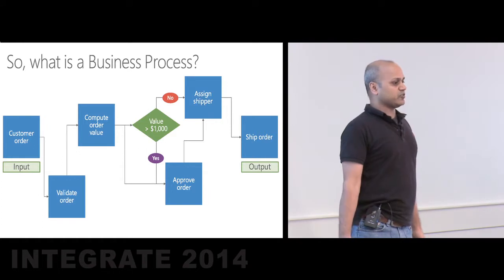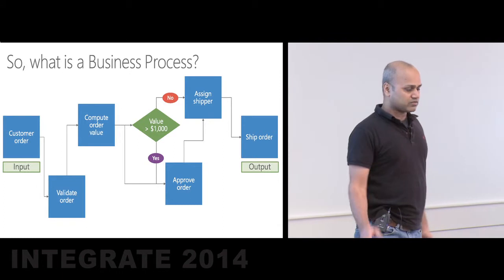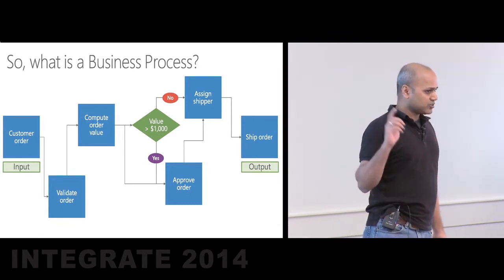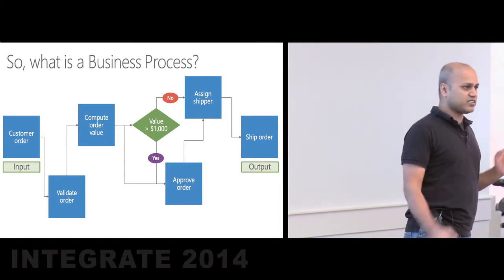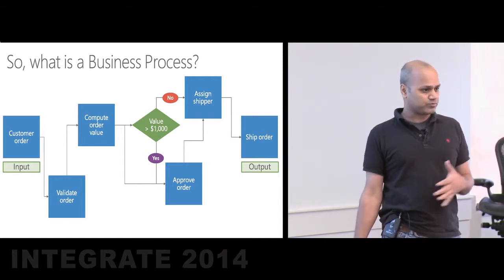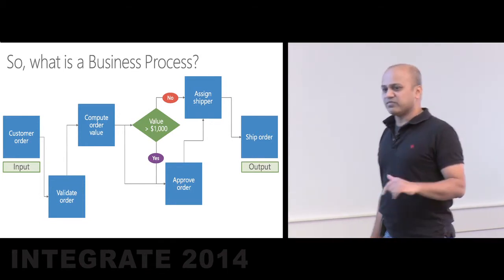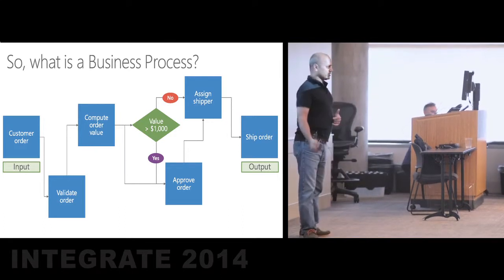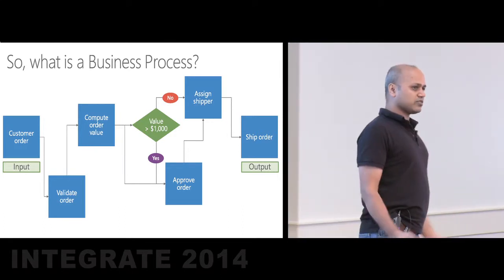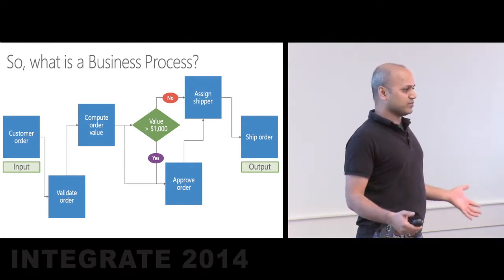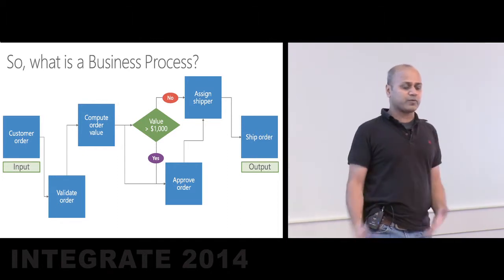Irrespective of what type of business process it is, there are a few things common to any business process. First, there is an input. Second, there is an output. In between, there is a series of tasks executed in a specific sequence to generate the desired output. Most business processes also have some kind of decision framework in the middle, which takes the input, makes a decision, and alters the flow.